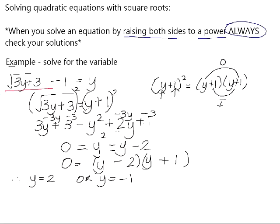Now that we've got those solutions, we just need to do a check to see if they're valid. You don't always need to write down your check — you can look at both sides and calculate it mentally or using your calculator. To check y equals 2: the left-hand side is the square root of 3 times 2 plus 3, minus 1. 3 times 2 is 6, plus 3 is 9, the square root of 9 is 3, and 3 minus 1 is 2. The right-hand side is just y, which is 2.